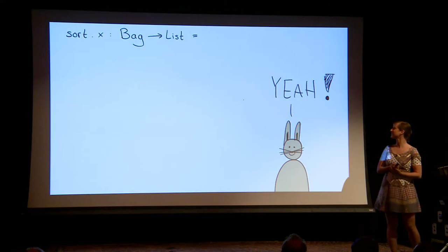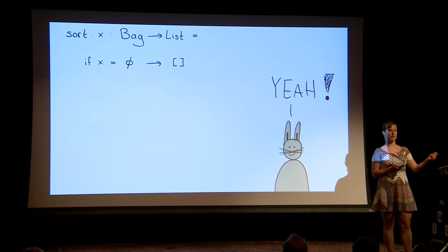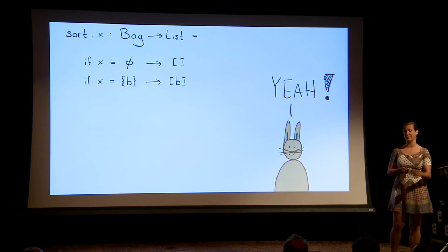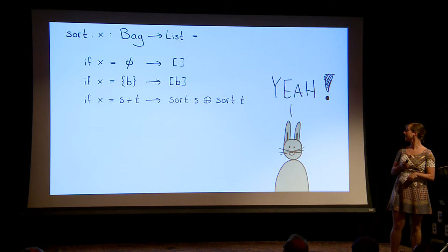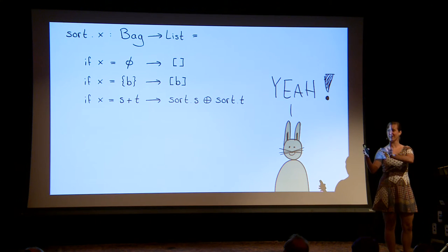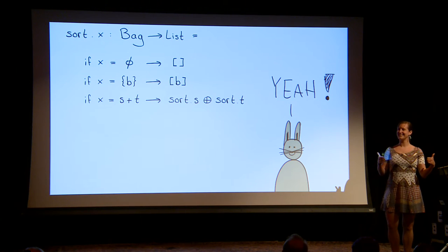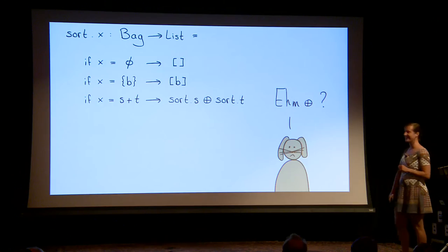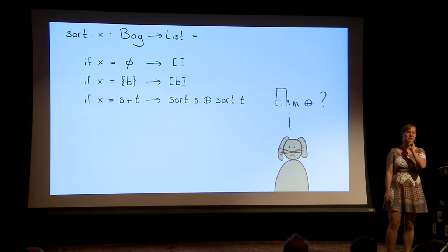So now I have a sorting algorithm. This is the sorting of a bag to a list: if my input is the empty bag, I return the empty list; if my input is a bag of one element, I return a list of one element; and otherwise I sort one side, sort the other side, and puzzle them together. Ta-da! Everyone is happy — apart from my bunny. He's not really happy. He's very confused — he's like, wait a minute, what is that puzzle? I'm confused. Help!